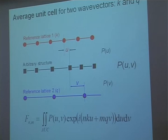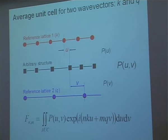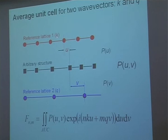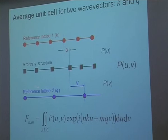The average unit cell is a probability. For example, for a one-dimensional structure, when you have an arbitrary structure with arbitrary positions of atoms, you can superimpose a periodic reference lattice. The periodicity is given by a scattering vector k. Then calculate the shortest distance of each atom to the reference lattice — this distance is called u. In the calculation, we use the probability of u and v, where v is the second distance to a second reference lattice given by the scattering vector q.